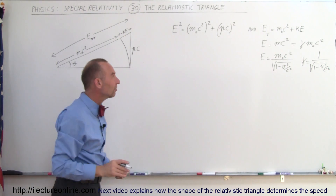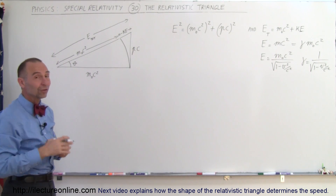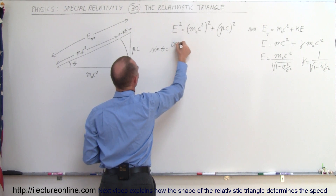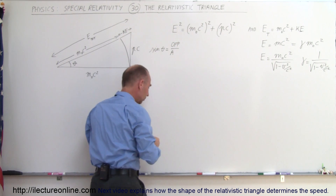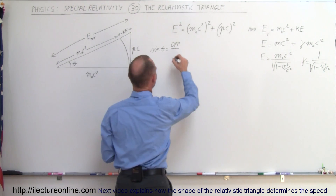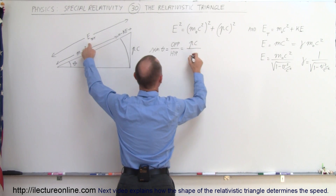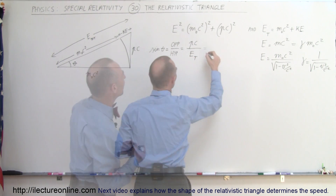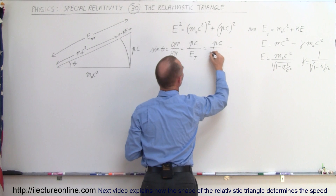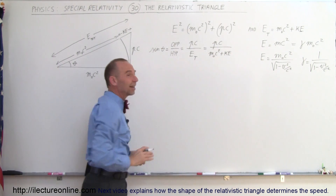Now let's take a closer look at this triangle. Let's look at this angle theta and calculate the sine and the cosine — you'll find some interesting results. The sine of theta, by definition, is the opposite side over the hypotenuse. That is the ratio of the momentum times the speed of light divided by the total energy E-total, which equals P times C divided by M-sub-naught C squared plus the kinetic energy. That's how we represent the sine of theta in this triangle.